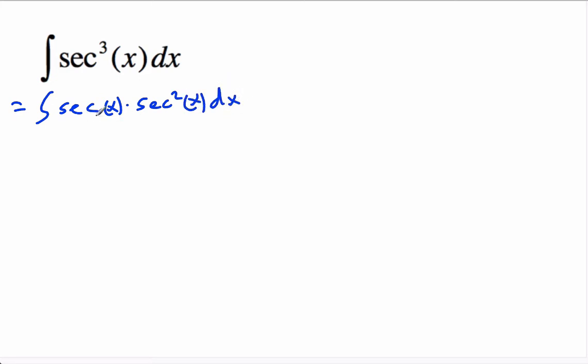You notice the thing on the left is easy to differentiate, and this thing here is easy to integrate. So we're going to do this by parts, and let u equals secant x, and dv/dx equals secant squared x.